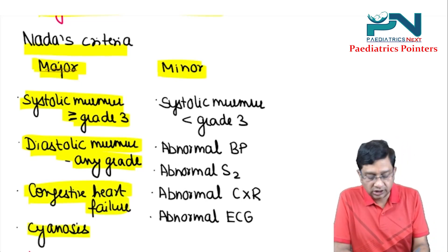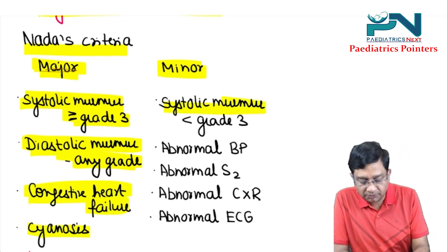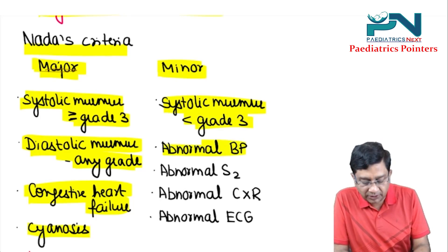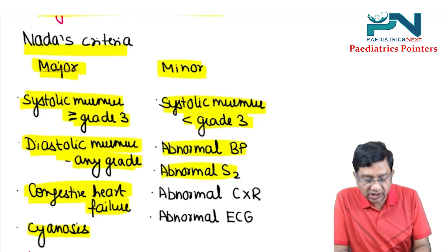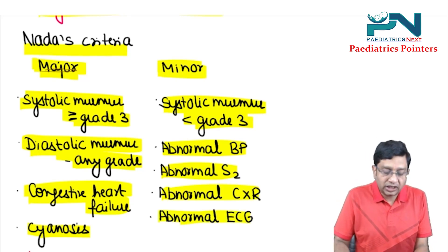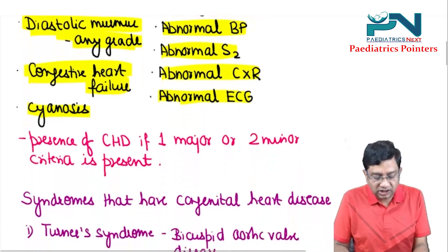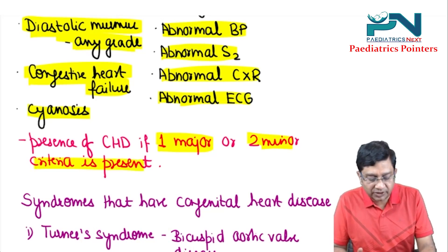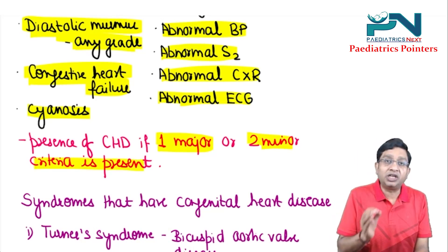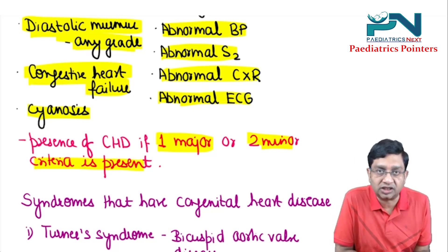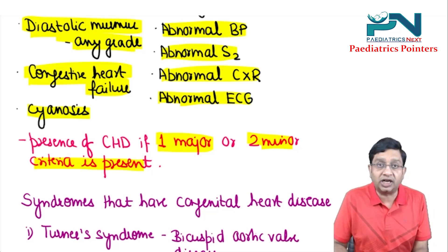The minor criteria includes systolic murmur less than grade 3, abnormal blood pressure, abnormal second heart sound, abnormal chest X-ray, and abnormal ECG. If there is one major or two minor criteria present, there is a diagnosis of congenital heart disease. This is NADA's criteria.